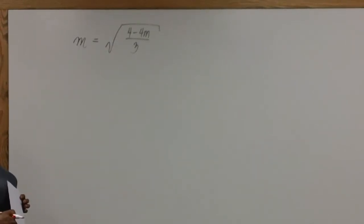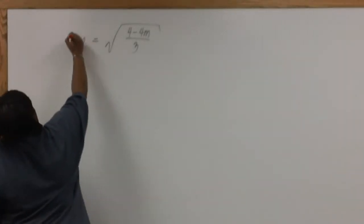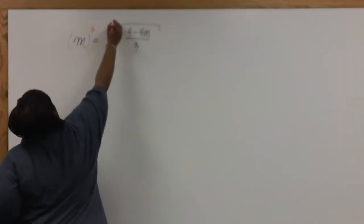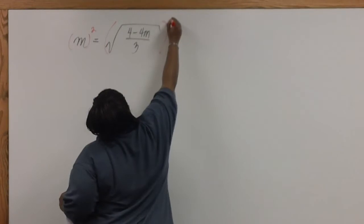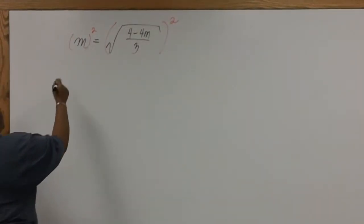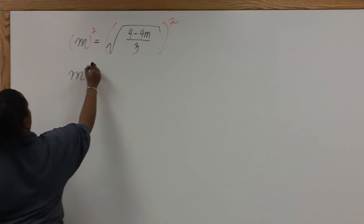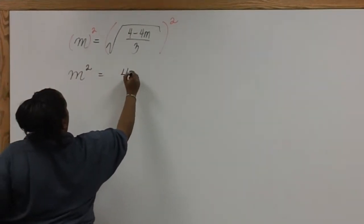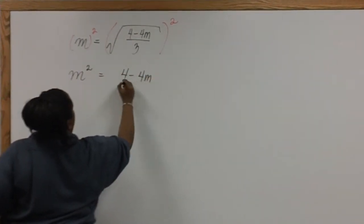The first thing we'll need to do to clear the square root is square both sides of the equation. This leaves us with m squared equal to 4 minus 4m over 3.